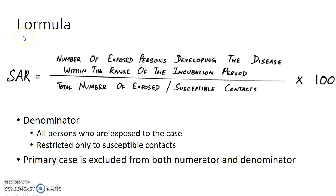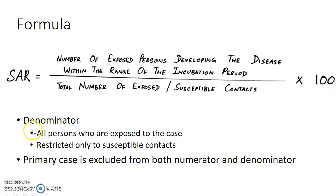Now let us see about the formula used to calculate secondary attack rate. SAR is equal to number of exposed persons developing the disease within the range of the incubation period divided by total number of exposed or susceptible contacts, into 100. A few points to remember: the denominator can be all persons who are exposed to the disease, or the denominator can be restricted only to the susceptible contacts. Also, the primary case is excluded from both numerator and denominator.